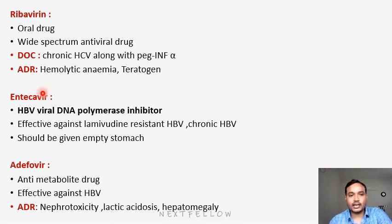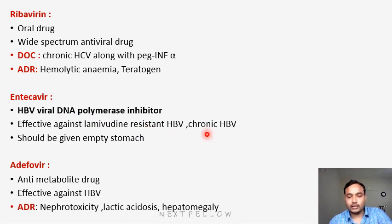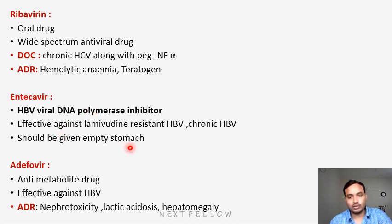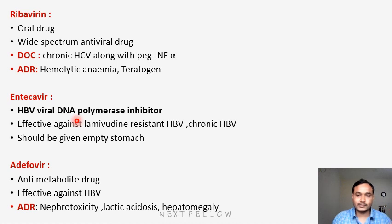Next is entecavir, which inhibits hepatitis B viral DNA polymerase. It is effective against lamivudine-resistant hepatitis B and chronic hepatitis B virus. Normally in hepatitis B infection, we first prescribe interferon and lamivudine; if both become resistant, then we go with entecavir. Entecavir should be given on an empty stomach because it is absorbed only in that state.